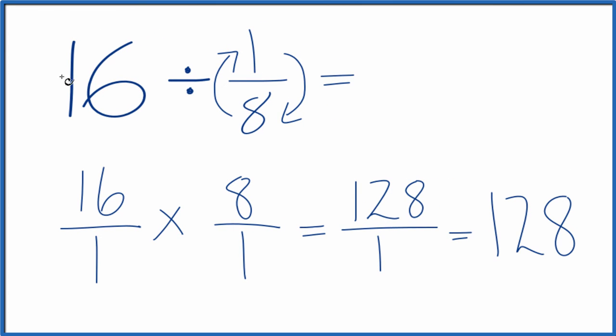So in answer to our question, 16 divided by 1/8, that's 128. If you took 128 and you multiplied it by 1/8, you'd end up with 16.